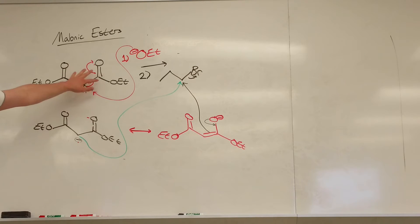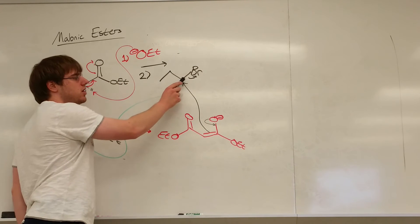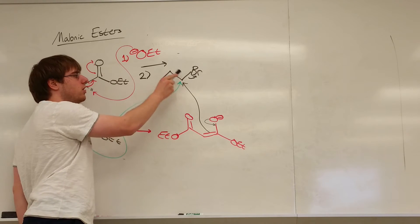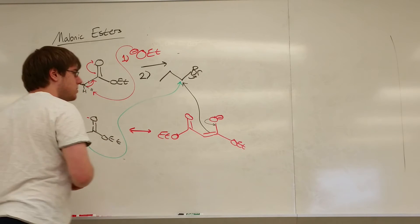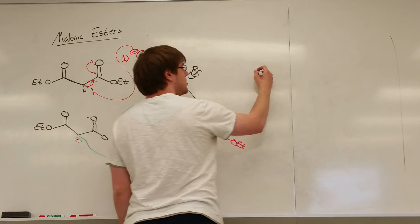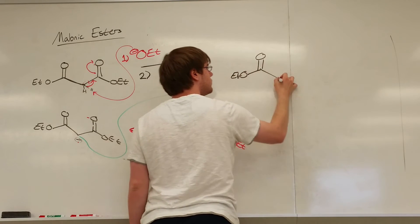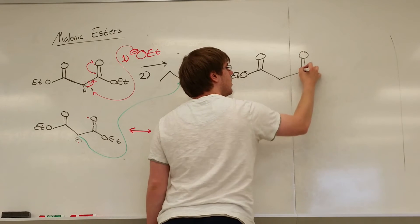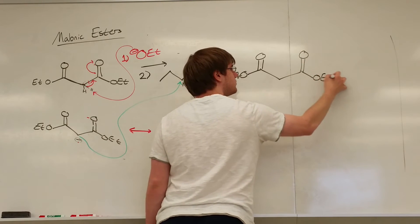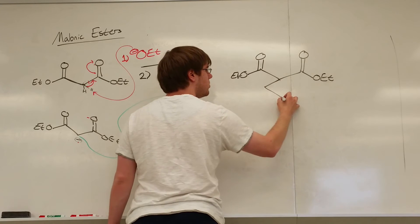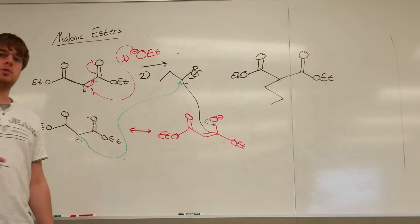You reform the carbonyl, and now you attach however many carbons were attached to the bromine. So I have one, two, three. So what I should expect to get at the end of these two steps is the esters being the same, OET, OET, and then I have one, two, three. So that should be what I expect to get.